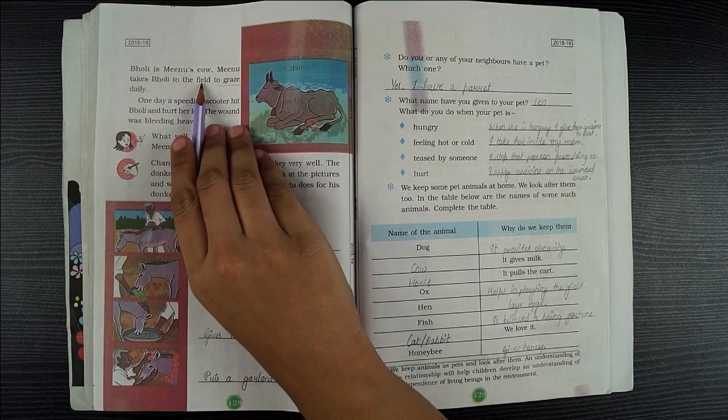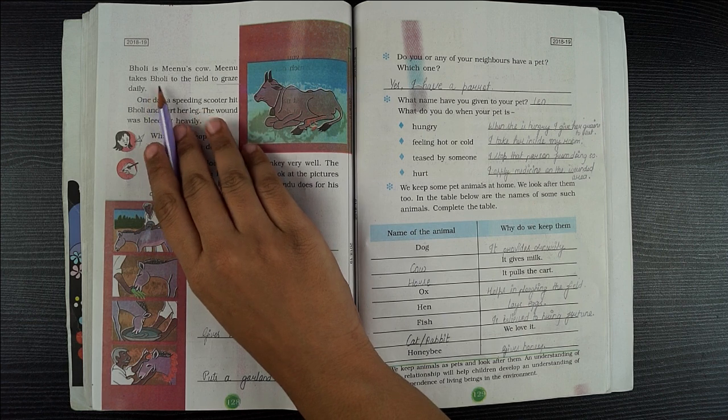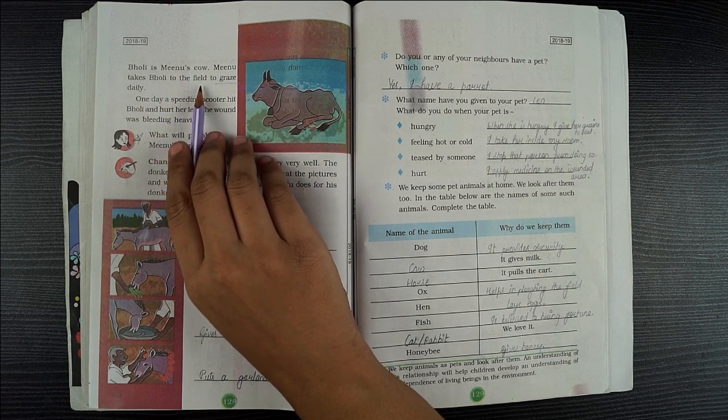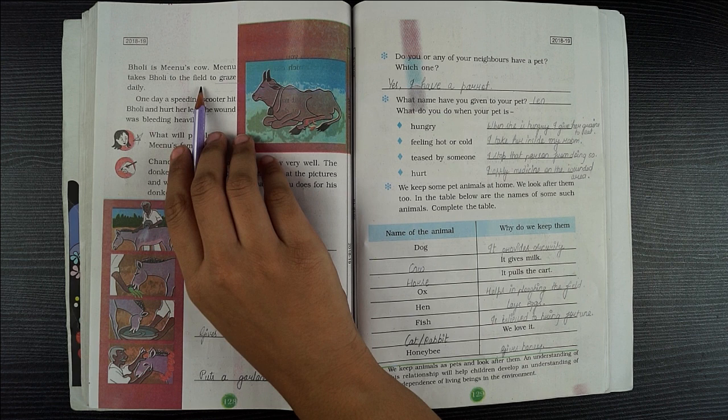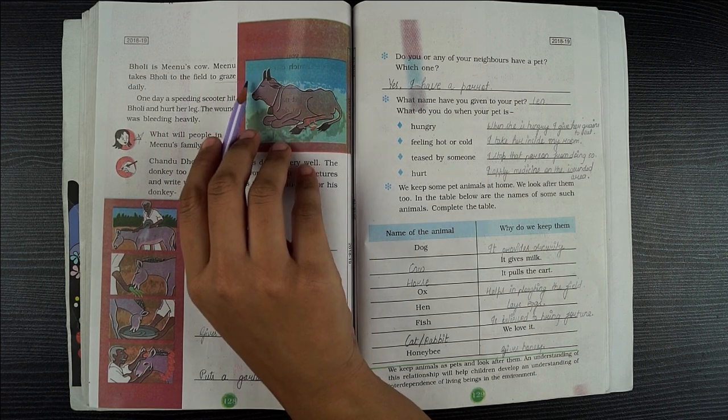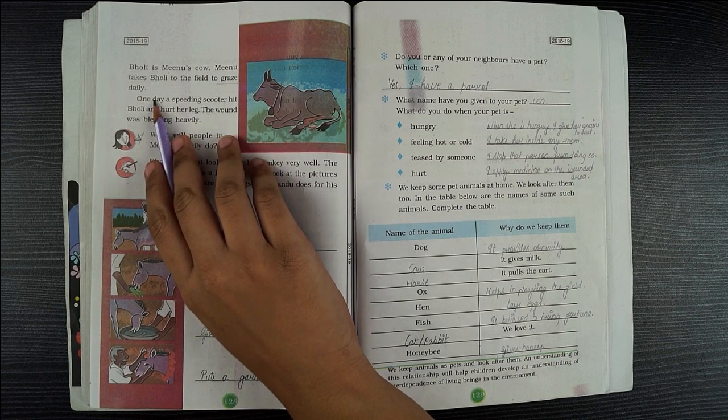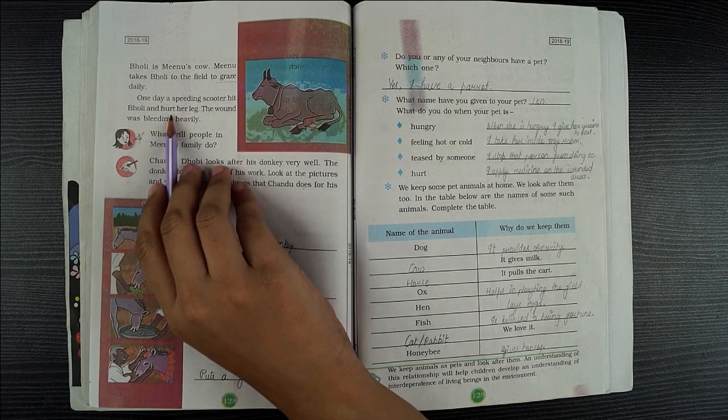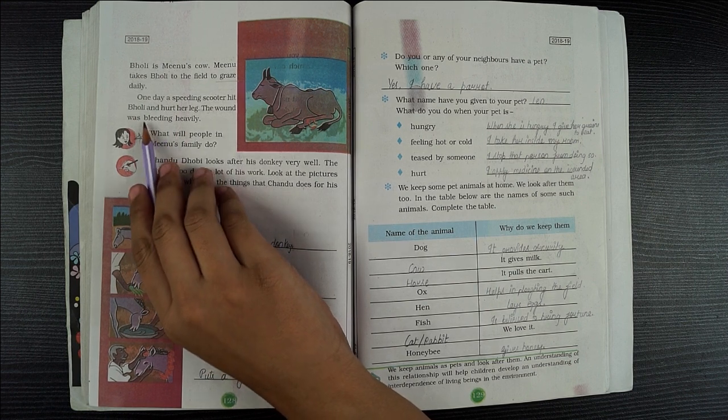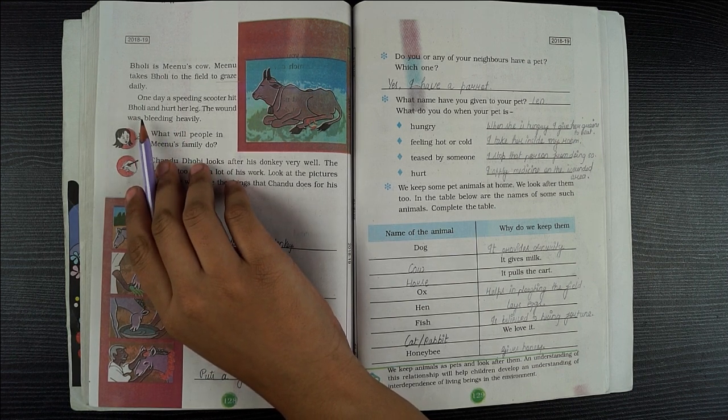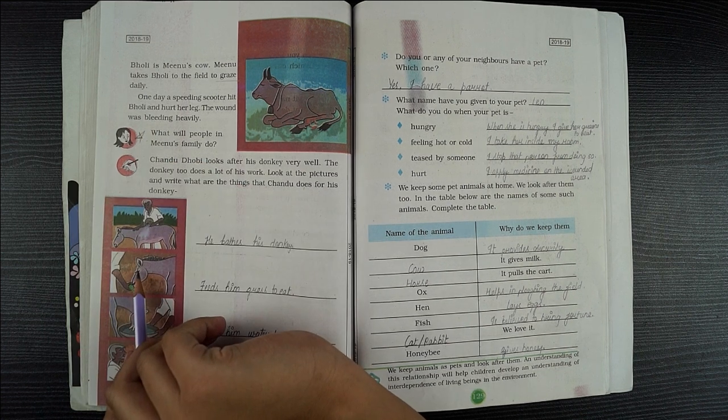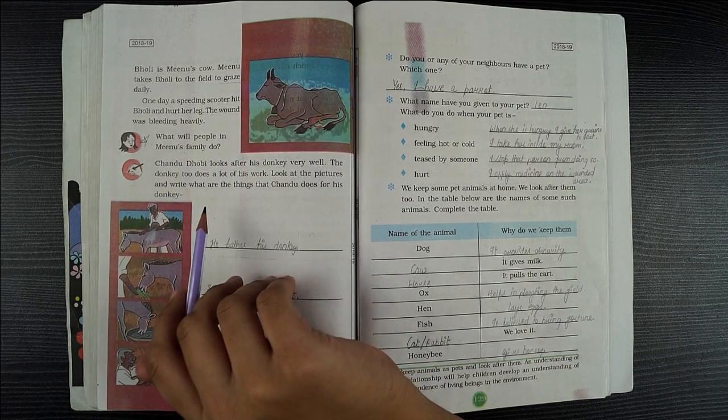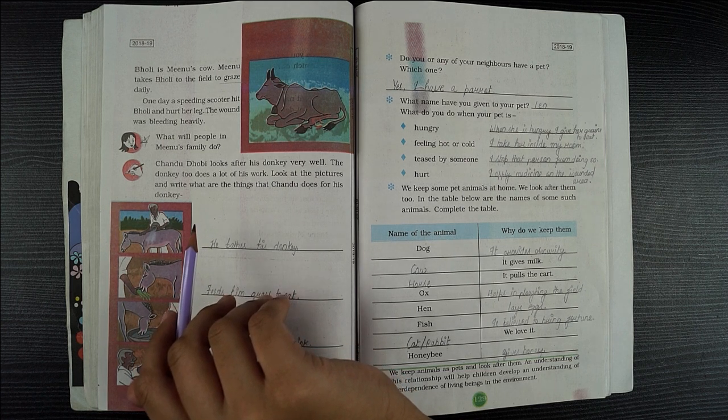Bolly is Minou's goat. Minou takes Bolly to the field to graze daily. One day a speeding scooter hit the Bolly and hurt her leg. The wound was bleeding heavily.